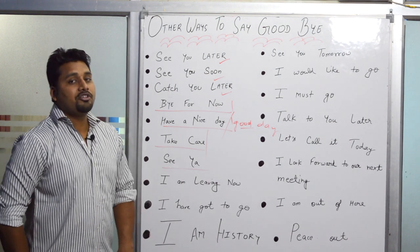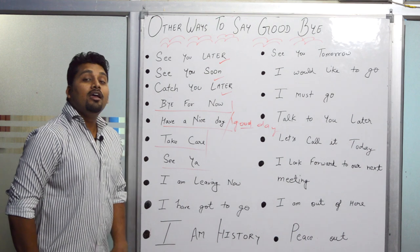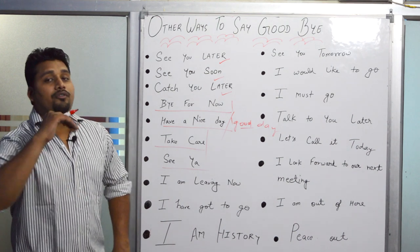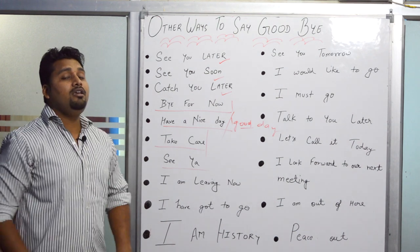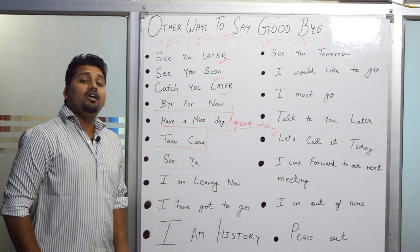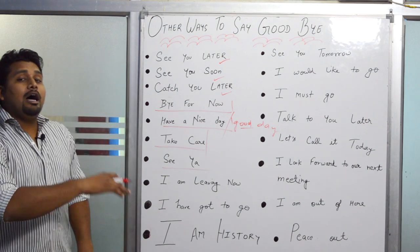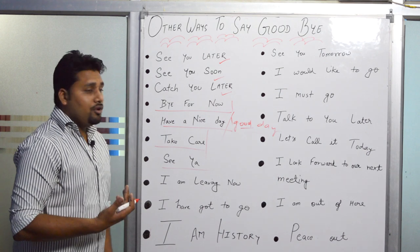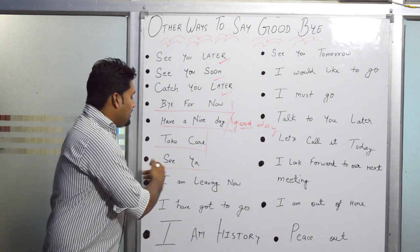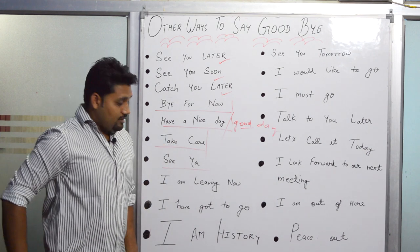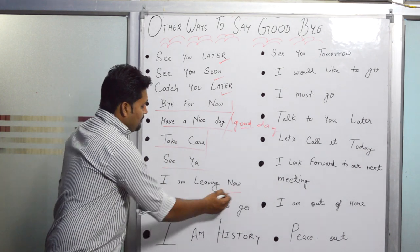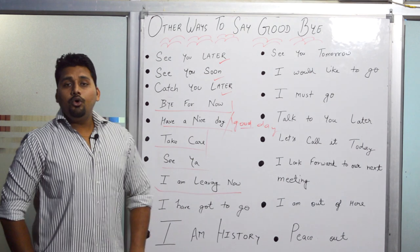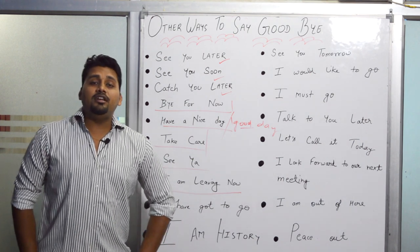Next is 'See ya' — it is an informal way to say goodbye, used in a friend circle. You can also say 'See you tomorrow' — for example, when you are with colleagues or friends and you will meet them the next day, you say 'See you tomorrow.'